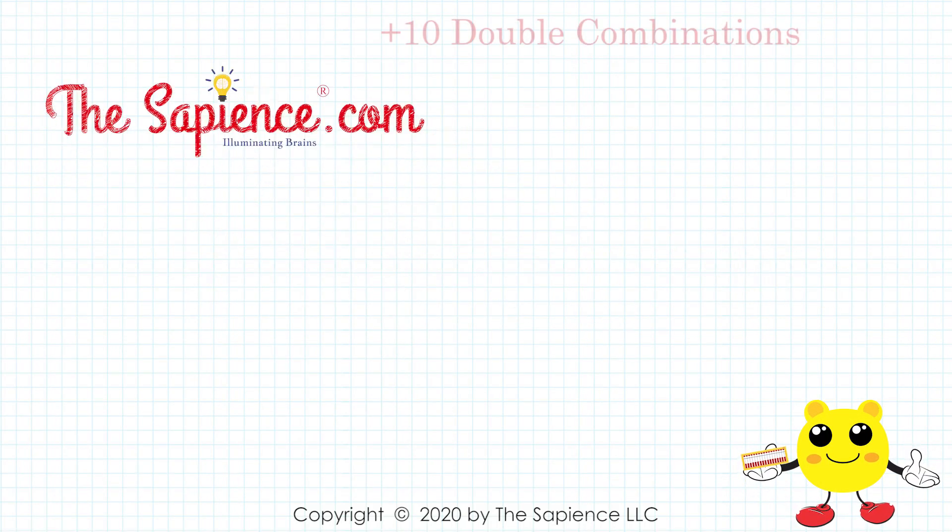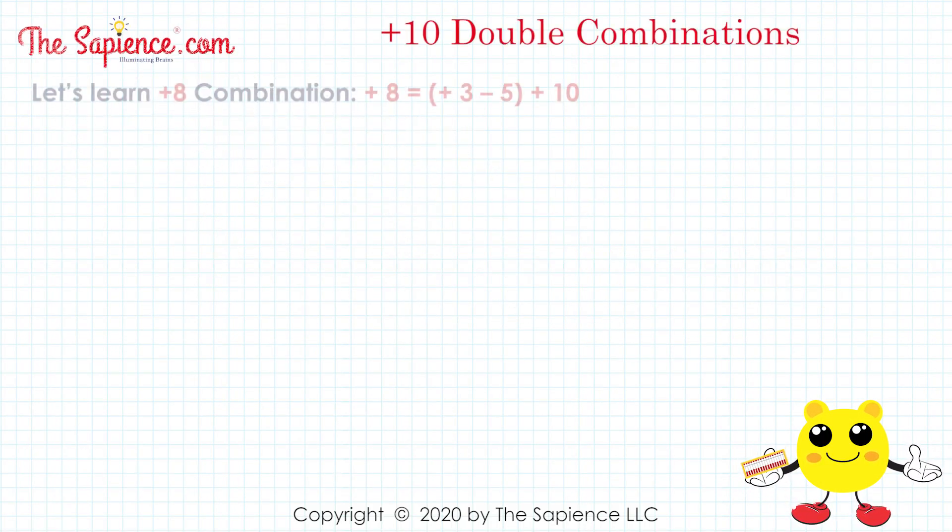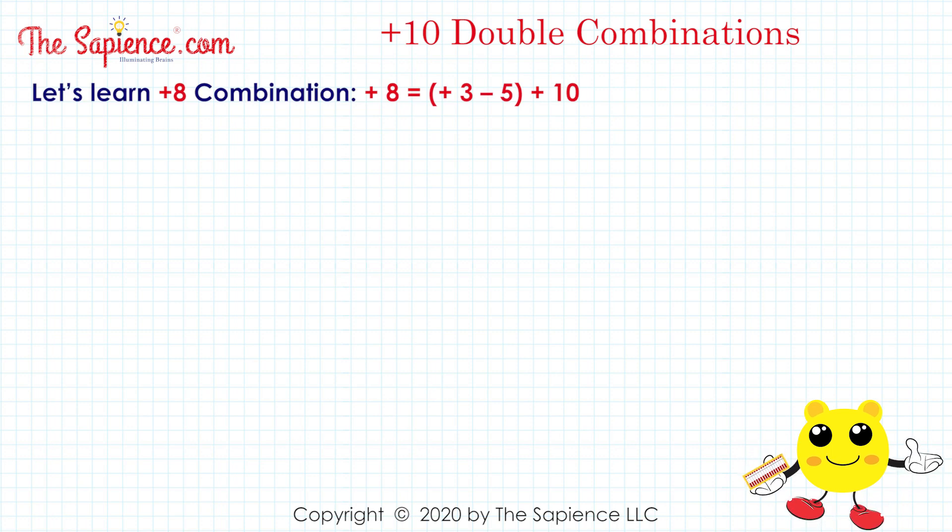Hi, welcome to thesapience.com. Let's learn plus 8 combination: plus 8 equals plus 3 minus 5 plus 10.